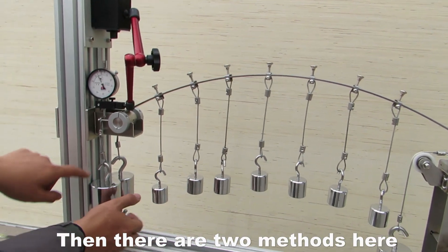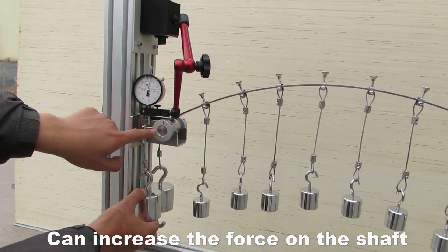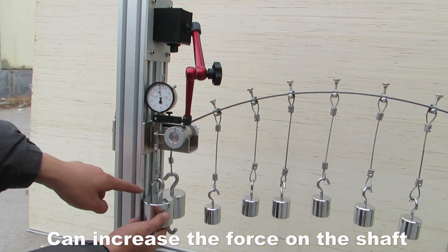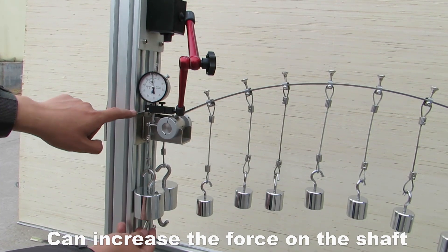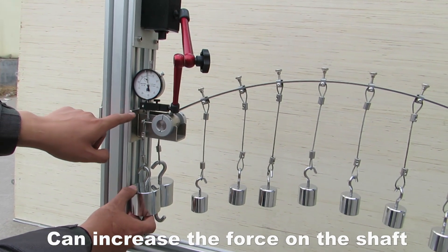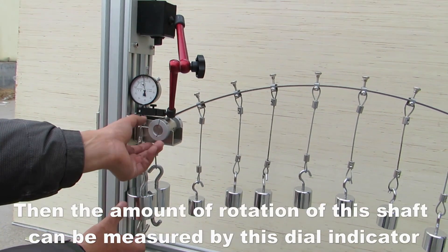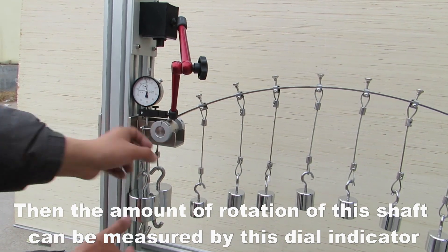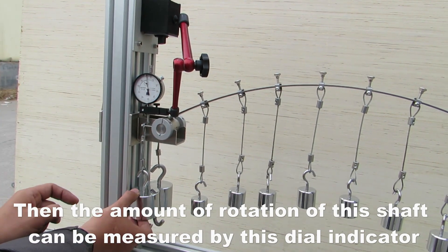Then there are two methods here that can increase the force on the shaft. Then the amount of rotation of this shaft can be measured by this dial indicator.